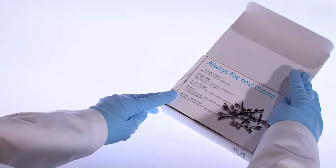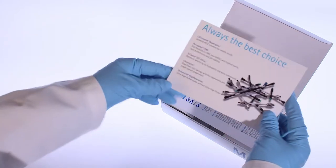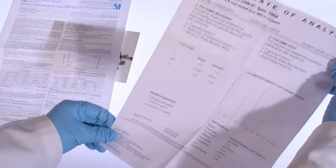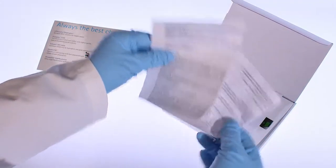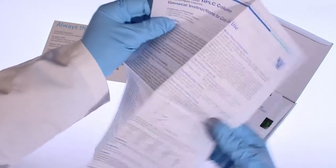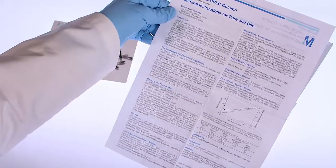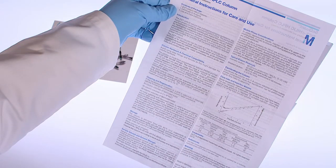The column box contains not only the column itself, but also the certificate of analysis. In addition, the very useful insert sheet contains important general information about the column and recommendations for column care and use.